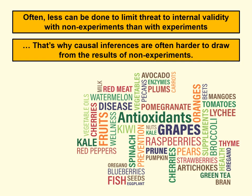Often less can be done to limit threats to internal validity in non-experiments than in experiments, which is why it's usually harder to draw causal inferences from non-experimental results. Consider research on healthy diets — much of it is non-experimental. Researchers find that some people drink a lot of red wine or eat many vegetables and measure health differences. But people who differ in diet may also differ in exercise, sleep, or stress. As a result, the nutrition literature can look like a confusing mess from the perspective of making strong causal claims — not because researchers are incompetent, but because they're studying complicated things using non-experimental methods.